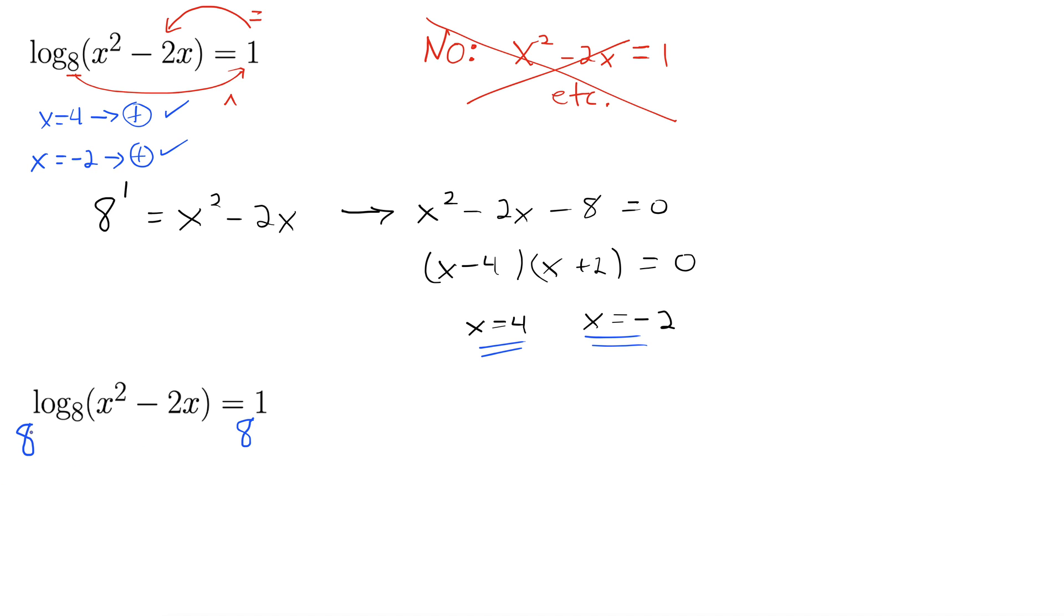So I'm now bringing this equation basically up into the exponents, and I'm taking both sides base 8. Well, 8 to the power of log 8, these are inverse functions. And when you take one function and put it into its inverse, they undo each other, leaving us only with what was inside. So this gives us x squared minus 2x, and then 8 to the 1 is clearly 8.